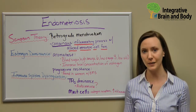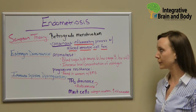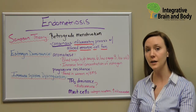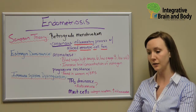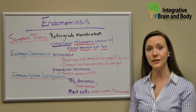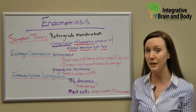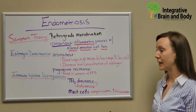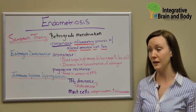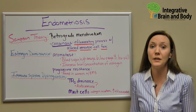One of the oldest theories behind endometriosis is the Sampson theory, where we have retrograde menstruation. What happens is as we have our period, some of the menstruation actually ends up back-flowing into the fallopian tubes and then to the peritoneal cavities, and the endometrial tissue ends up latching on to areas where it's not supposed to be. The problem with this theory is that just about every woman will eventually experience retrograde menstruation, but not every woman has endometriosis.